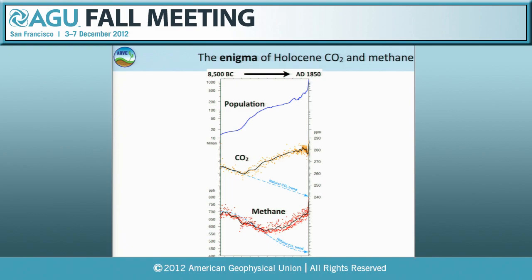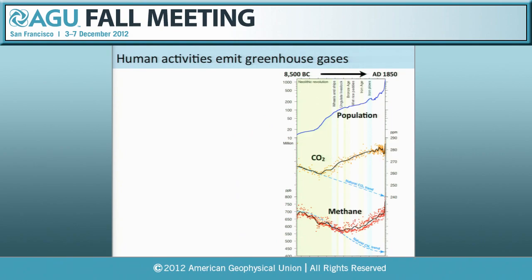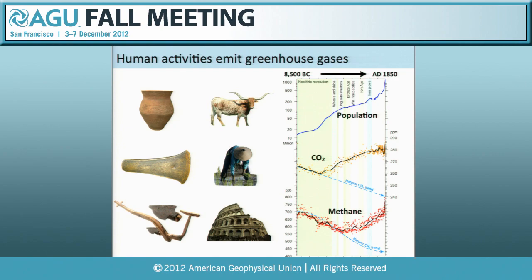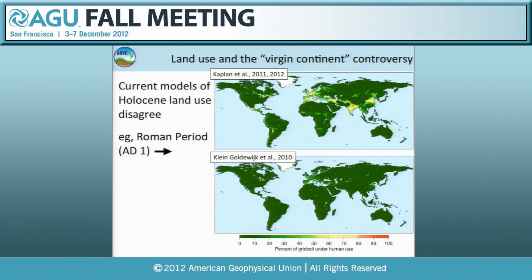Moving on to talk about the Holocene: some of you may have heard about the enigma of Holocene carbon dioxide and methane — otherwise called the Ruddiman hypothesis. We're interested in this mismatch between what we observe in previous interglacials, where CO2 and methane tend to decline, whereas in the Holocene they start rising between 6,000 and 8,000 years ago. I'm particularly interested in the link between these greenhouse gas records and population. What do we know about what people did over this time period? We invented pottery, domesticated animals, started metallurgy, rice cultivation, invented iron plows, and ultimately created massive cities already several thousand years ago. Humans had some kind of environmental impact already thousands of years ago, but there's a big controversy about how big that could have been.